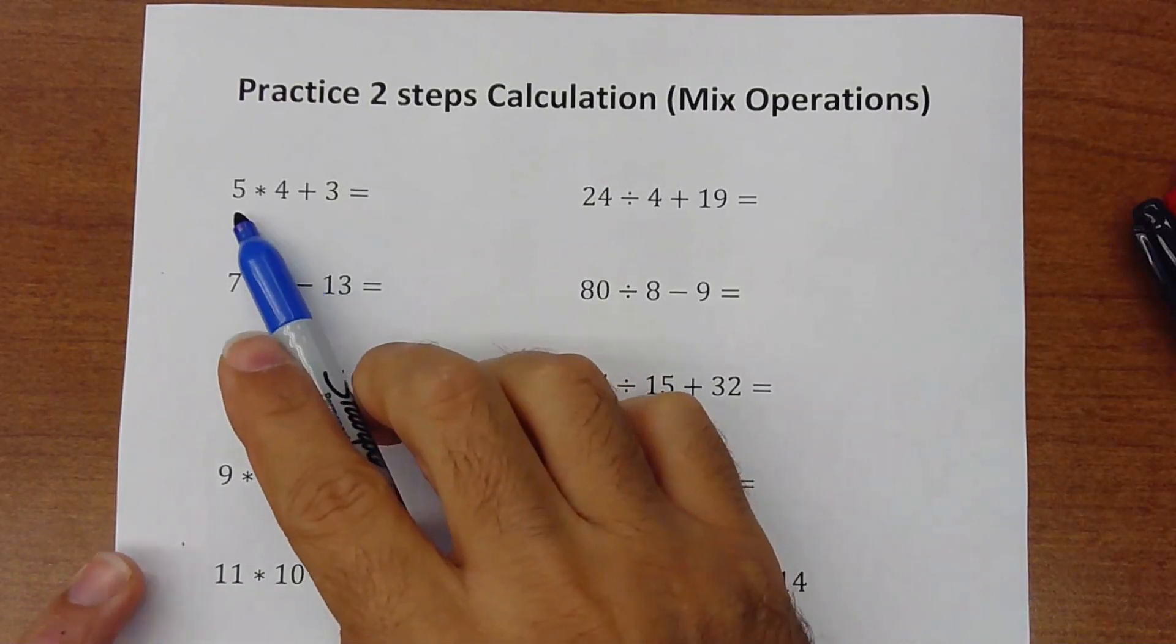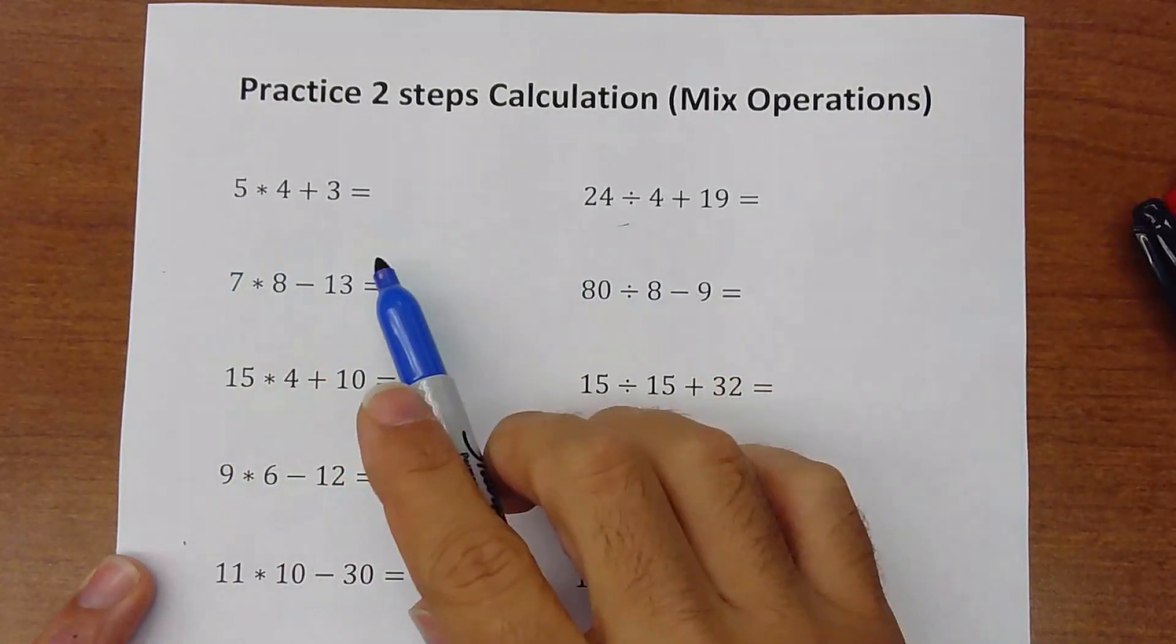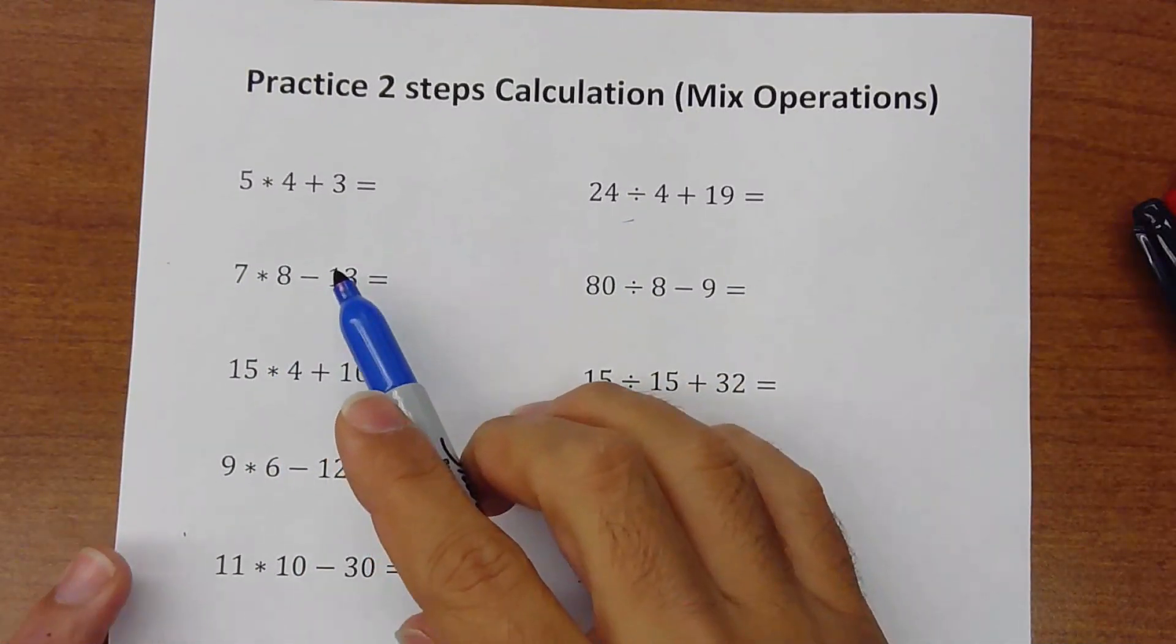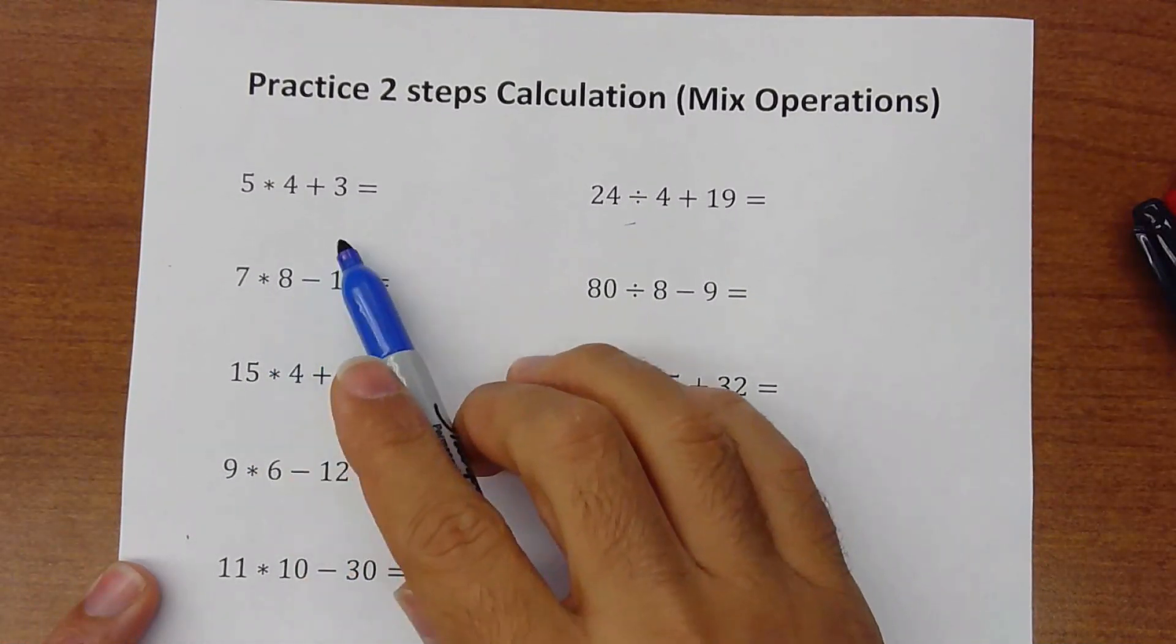So here you have always multiplication and division goes first, then addition and subtraction, even if it's not in the order that is showing here.